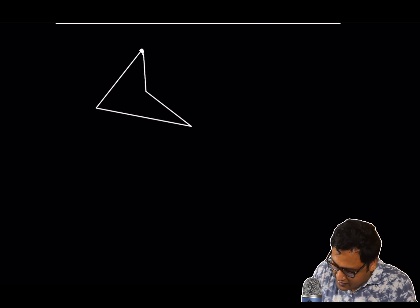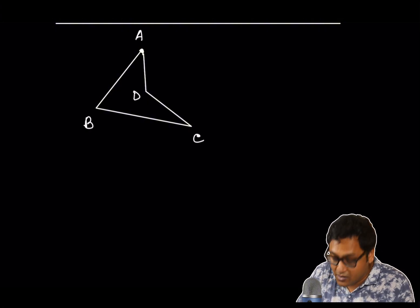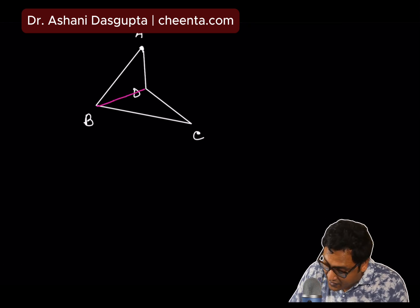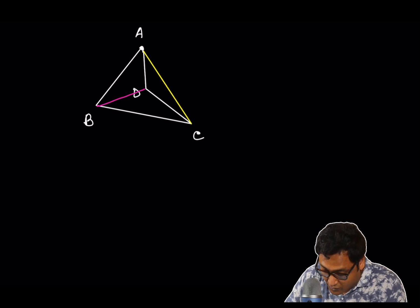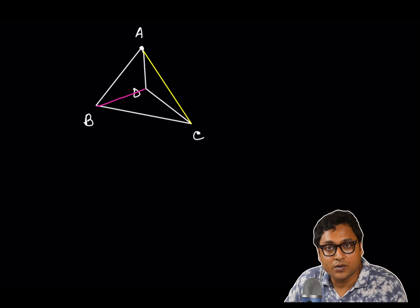So, A, B, C, and D. One of the diagonals will be inside the quadrangle, and the other diagonal that I'm drawing in yellow is outside the quadrangle. So, this is another example of a quadrangle.